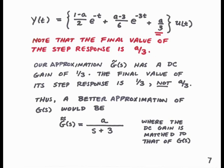We'll pick a better approximation, G̃̃, to be a/(s + 3). This has a DC gain of a/3, which is the same as the actual DC gain of the system. It also has the same time constant as the dominant pole in this case, which is at minus 3. So this approximation G̃̃ has the same DC gain as the original system, a/3, and nearly the same transient response.